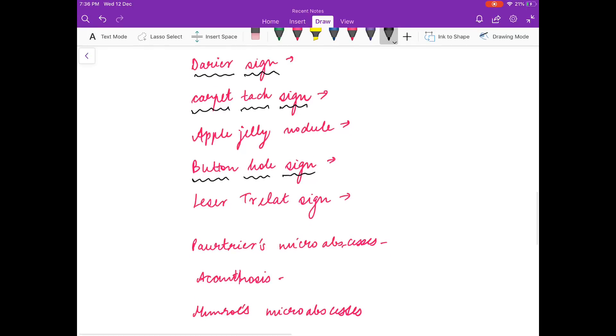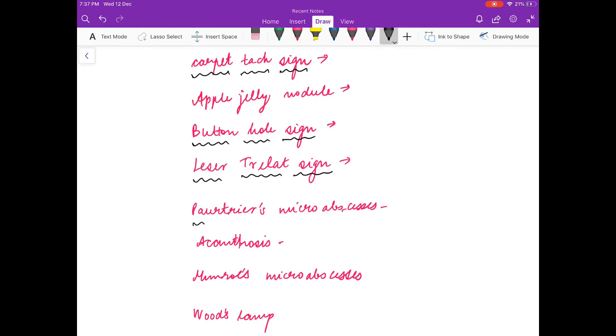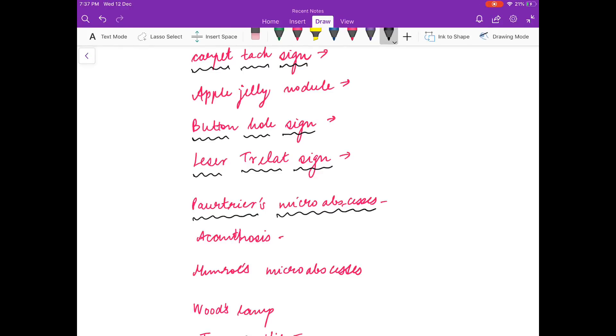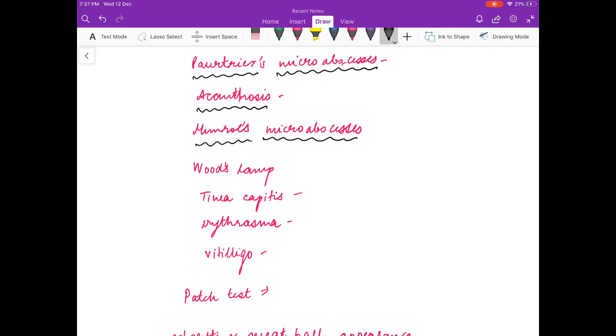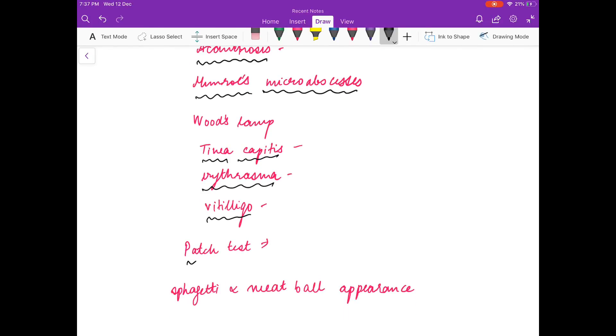Darier sign is seen in? Leser-Trélat sign is seen in? Pautrier's microabscess is seen in? What is acanthosis? Munro's microabscess is seen in? On Wood's lamp, what color does tinea capitis give? Erythrasma give? Vitiligo give? Patch test is for which disease? And spaghetti and meatball appearance is seen in?